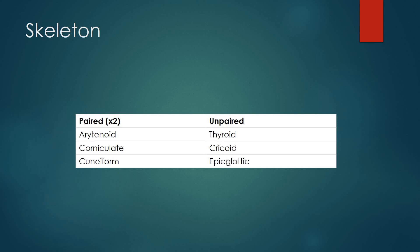The larynx consists of nine cartilages — three paired and three unpaired. The paired cartilages are the arytenoid, the corniculate, and the cuneiform cartilages. The unpaired cartilages are the thyroid, cricoid, and epiglottic cartilages.